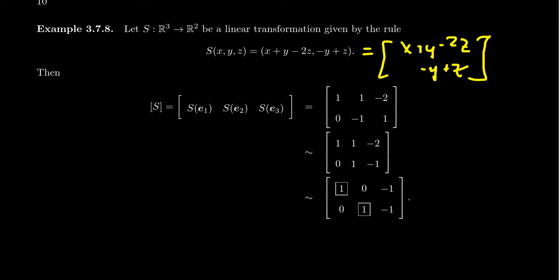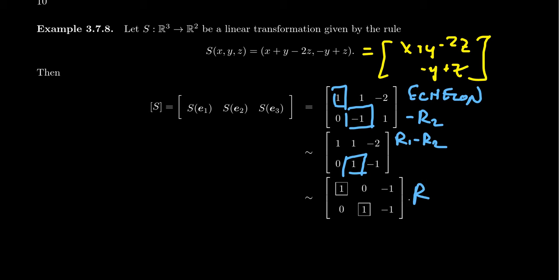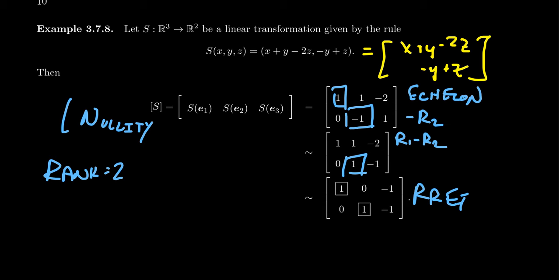Now let's row reduce. The first pivot position is already good. For the second pivot position, multiply the second row by −1. This matrix is already in echelon form, so we can already determine rank and nullity. For row reduced echelon form, take row 1 minus row 2 to eliminate the 1. The rank equals 2 — the number of pivot columns. The nullity is 1 — the number of non-pivot columns. This tells us the map is not 1-to-1 because the null space is non-trivial.